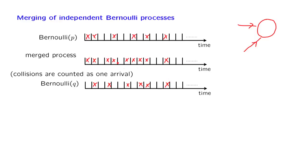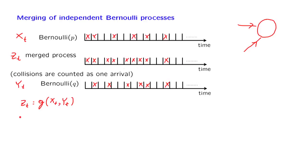Now, what can we say about the merged process? We will argue that it is a Bernoulli process with a certain parameter that we will compute. To check the Bernoulli property for the merged process, the first thing we need to ensure is the independence assumption — independence across slots. Let us look at two typical slots. It helps to define notation: let XT and YT be the original processes, and let ZT be the merged process.